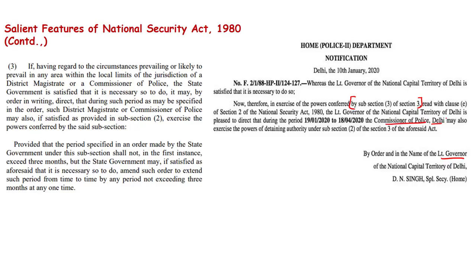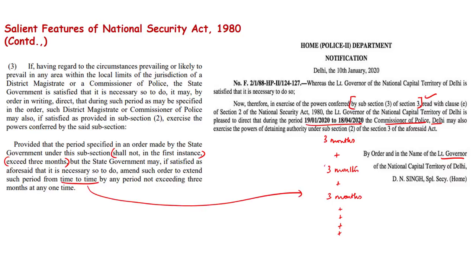The commissioner of police will now have this power for a period of three months from 19th January 2020 till 18th April 2020. This three-month period is because section 3 states that the period specified in an order made by the state government shall not exceed three months in the first instance. State governments may amend such an order to extend the period, and each extension shall not exceed three months at any single extension.